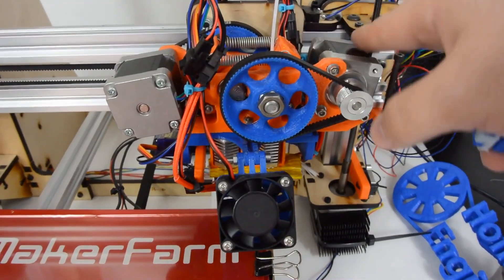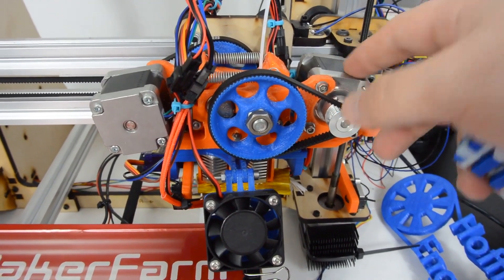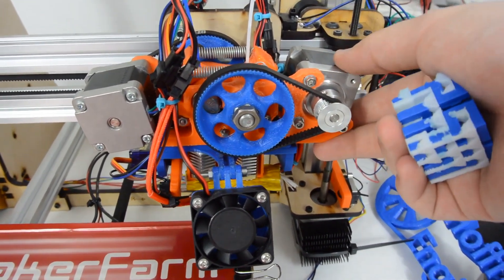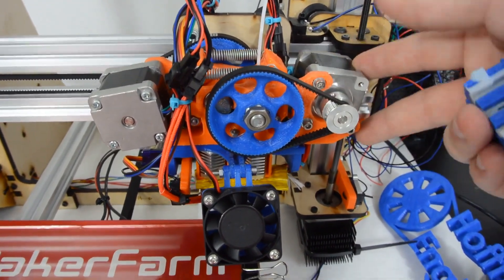And if you haven't seen this extruder in use before, this is the Itty Bitty Flex Dual Extruder. You can click on the screen or in the link in the description below for my video on printing this and putting this on my printer, if you're interested in that.